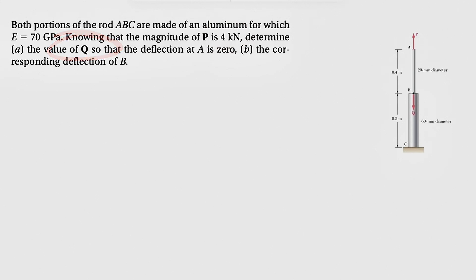We know that the magnitude of the force P, which is applying at point A, is 4 kilonewtons. We need to determine the value of Q, the force applying at point B, so that the deflection at A is zero, and in part B, we need to find the corresponding deflection at point B. So for having zero deflection, basically the deflection of AB has to equal the deflection of BC.